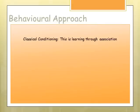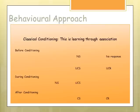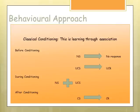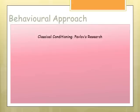Classical conditioning is learning through association. Remember the word 'classical' has 'as' in it, and 'association' starts with 'as' — so classical is association. Before conditioning, we have a neutral stimulus that produces no response and an unconditioned stimulus that produces an unconditioned response. During conditioning, these two become associated and are paired together. With enough pairings, the neutral stimulus becomes the conditioned stimulus and produces the conditioned response. This was first recognised through Pavlov.